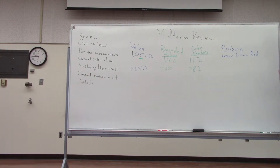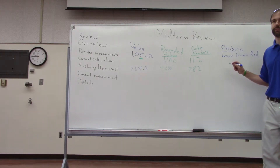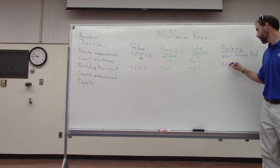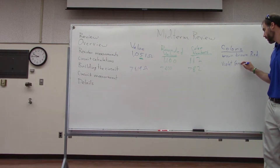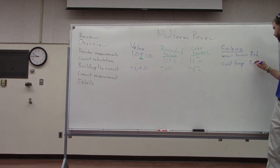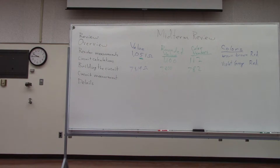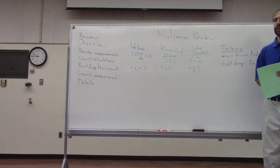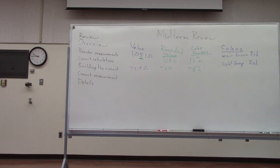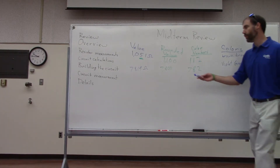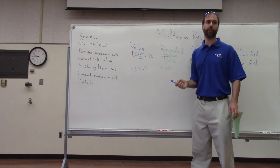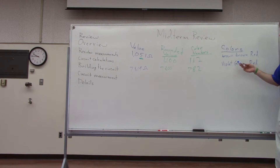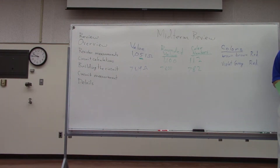The color numbers are 7, 8, and 2 — because there are two zeros. The color for 7 is violet, the color for 8 is grey, and the color for 2 is red. You write down exactly what you see on the meter screen and translate that into the corresponding colors — no tolerance bands or preferred resistor values to worry about.